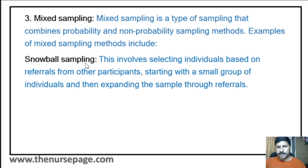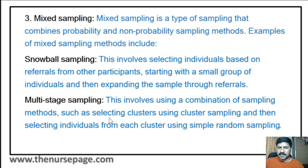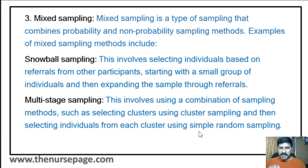Another example of mixed sampling is multi-stage sampling. Multi-stage sampling involves using a combination of sampling methods — for example, selecting clusters using cluster sampling (which is probability sampling) and then selecting individuals from each cluster using simple random sampling. It is multi-level: after selecting one stage, they reduce the sample size further. That is multi-stage sampling, an example of mixed sampling.